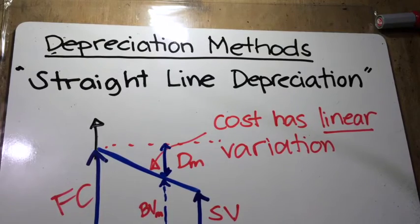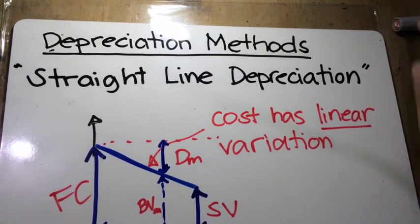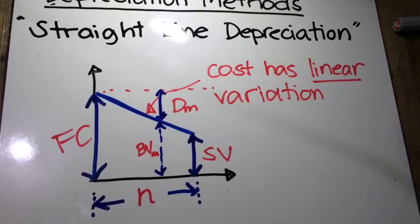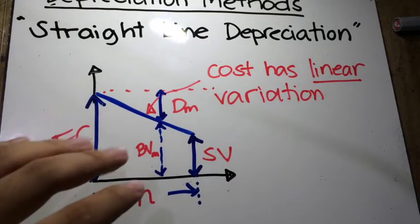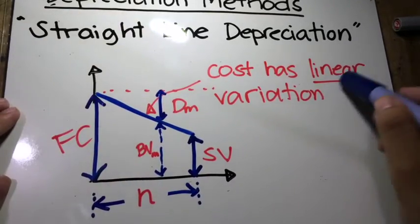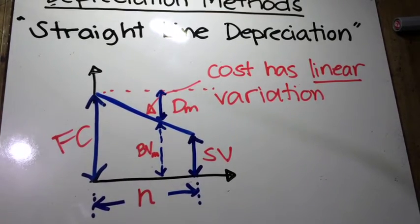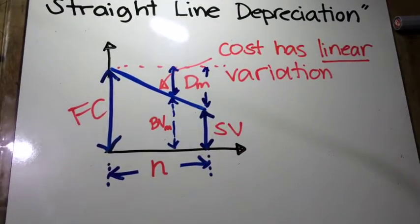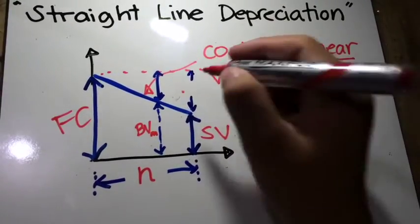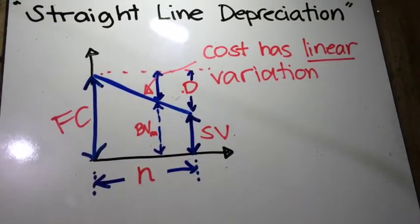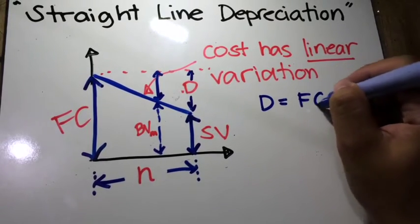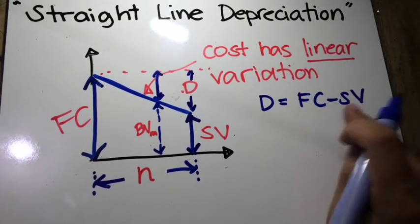We have different methods for calculating the depreciation. One of the most common methods is called the straight-line depreciation. From the name itself, it simply means that the book value has linear variation — the graph of the cost is a line. So from there, we can see that the depreciation for time n is simply equal to FC minus SV, or the first cost minus the salvage value.